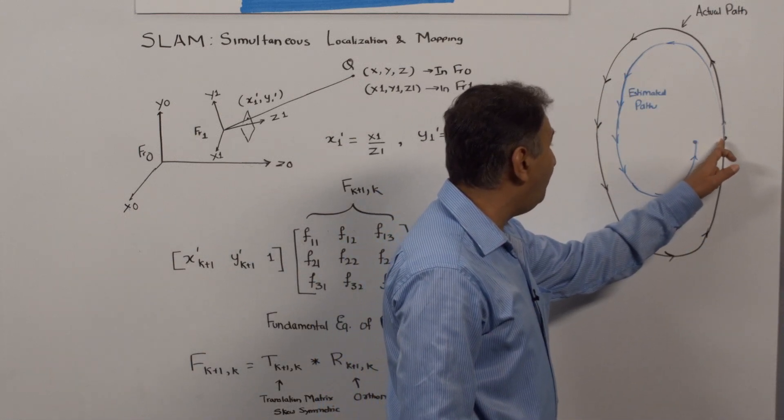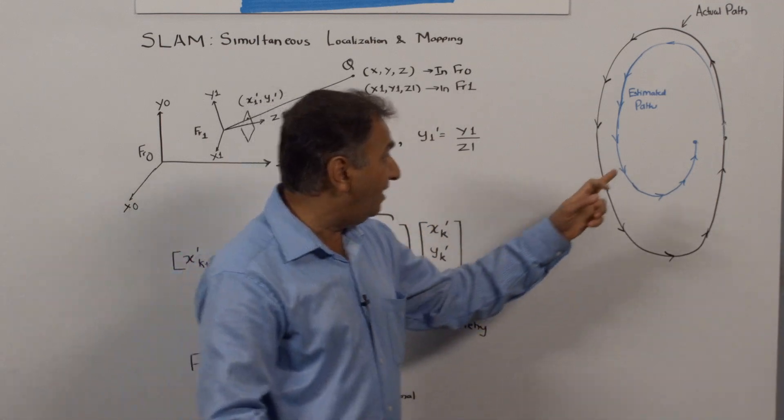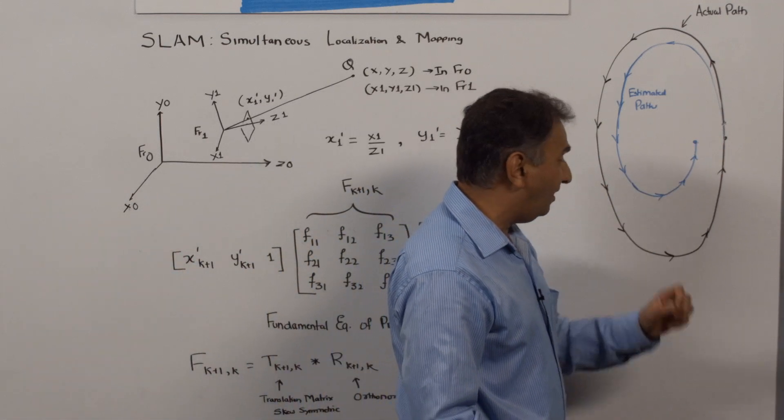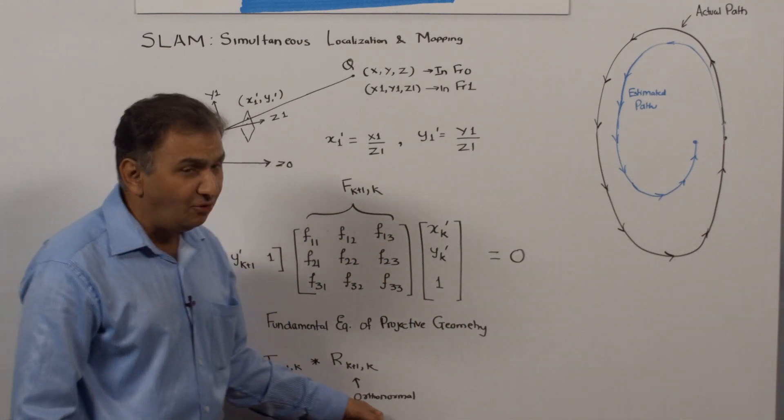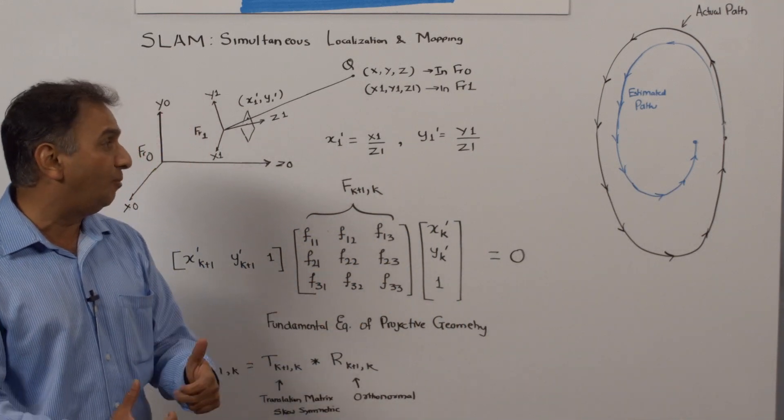Clearly, the starting point and the ending point of the camera are not the same, and this is a loop closure error that we would like to correct by tuning the translation and the rotation parameters to achieve a loop closure.